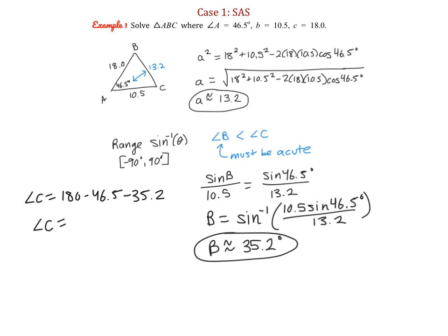Angle C is 98.3 degrees — an obtuse angle. So if we had tried to find angle C using law of sines first, we wouldn't have gotten the correct answer because arc sine cannot give us an obtuse result. Make sure you're strategic about the order in which you solve.